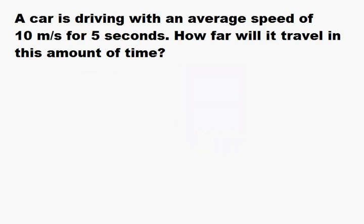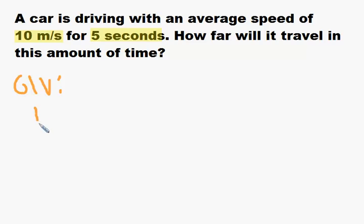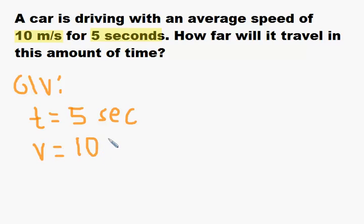Now let's try solving three sample problems. Pay attention to the units — that's one way to find out what's given to you in the problem. A car is driving with an average speed of 10 meters per second for 5 seconds. How far will it travel? First step: identify and write down your givens. Time is 5 seconds, velocity is 10 meters per second, and it's asking for how far, which is distance.